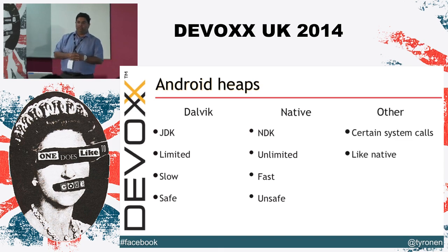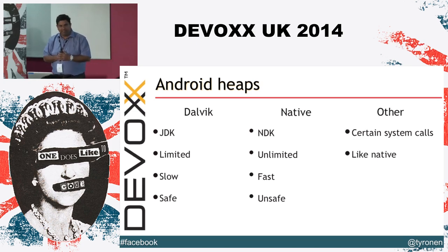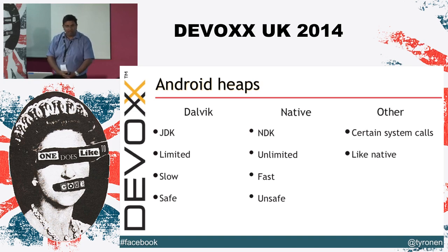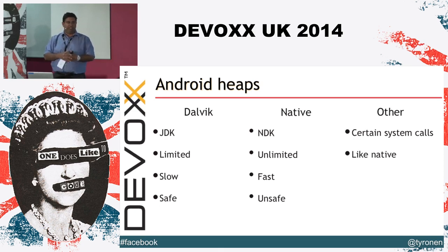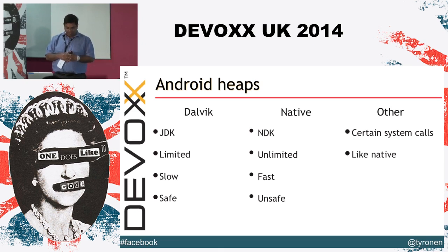The third heap — Google gave it the very clever name 'the Other Heap.' It's actually a miscellaneous collection of 16 heaps. They behave much the same way as the native heap, with the same dangers and advantages, but you can only get to them from certain system calls. There's one in particular I'm going to talk about later.